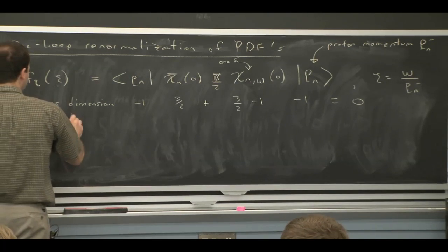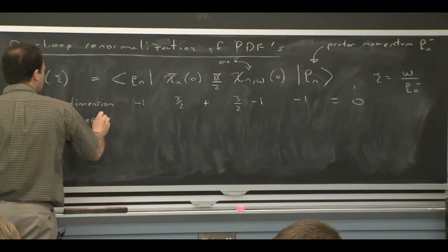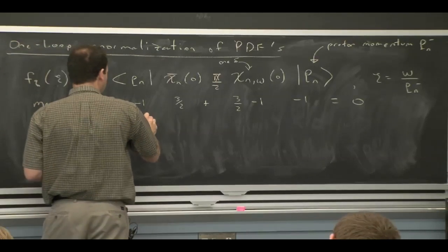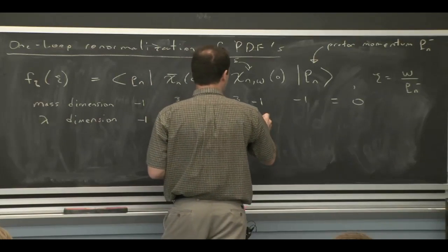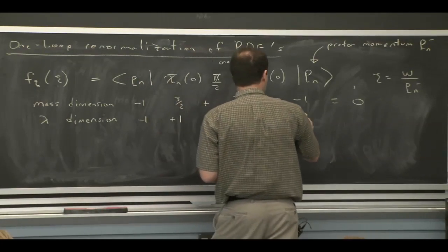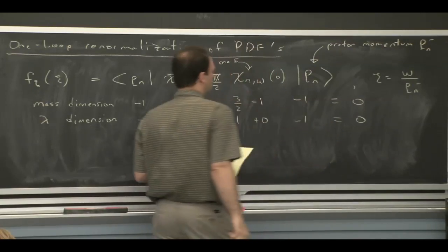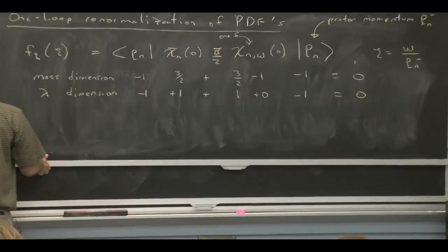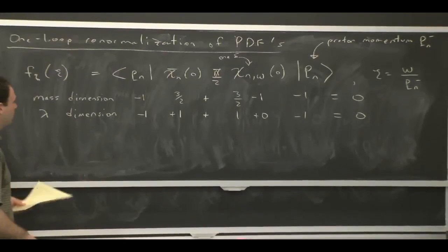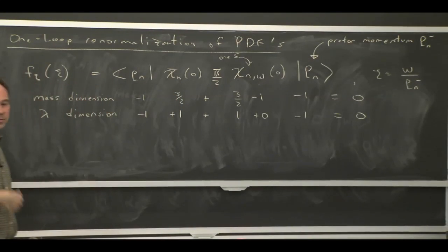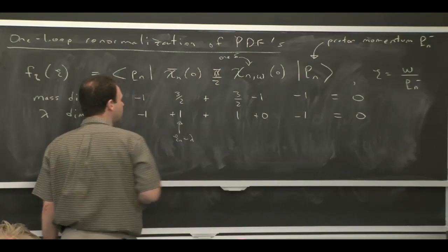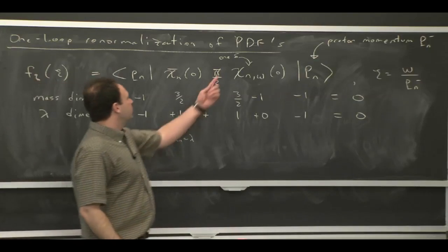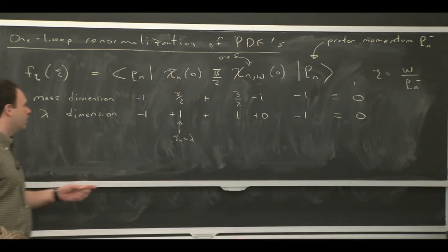So F is really a dimensionless function, and that's why it makes sense that we defined it to depend on this dimensionless ratio. You can also look at the lambda dimension — that's also 0. We already had a power counting for our chi fields: the C field inside the chi fields scales like 1, so this is just coming about because this guy is order lambda. The delta function just involves large momentum, so it has no power counting.